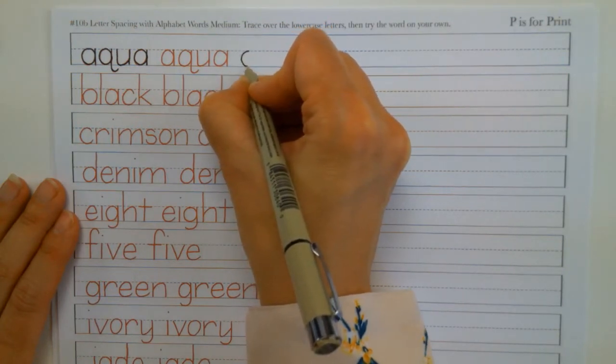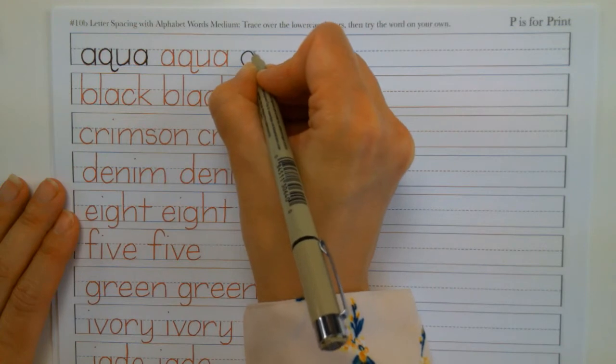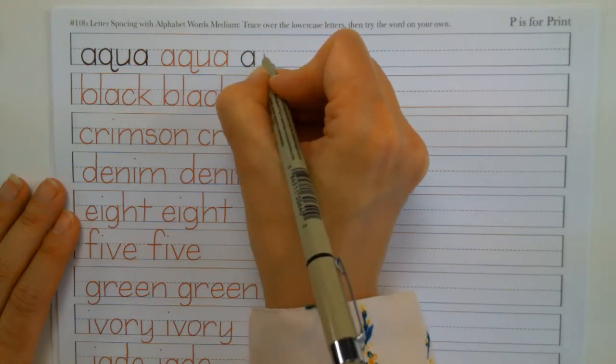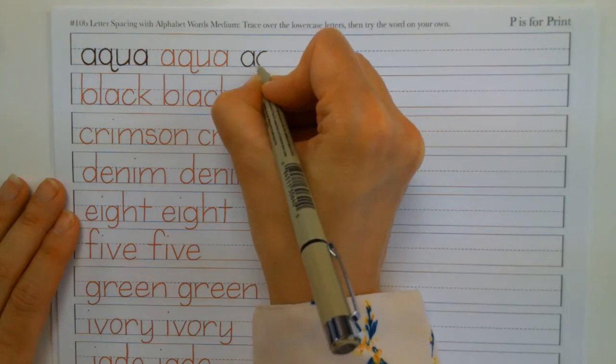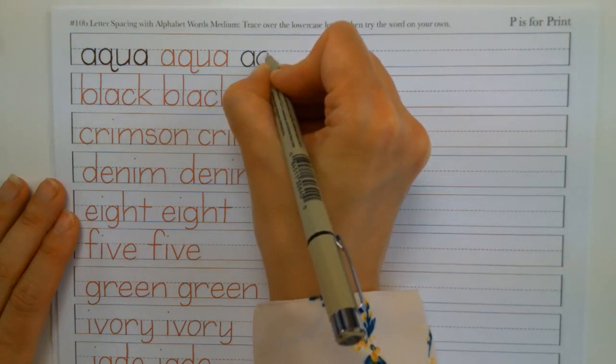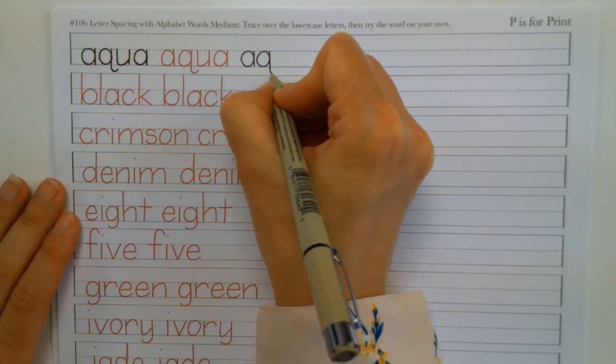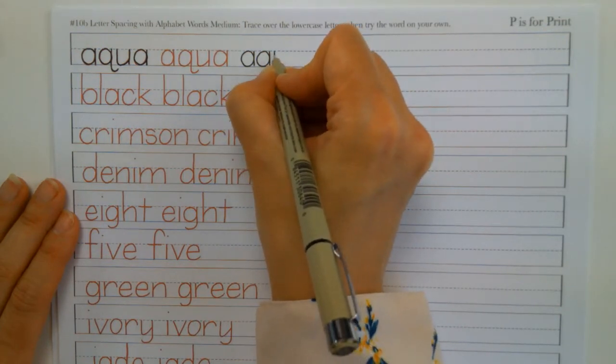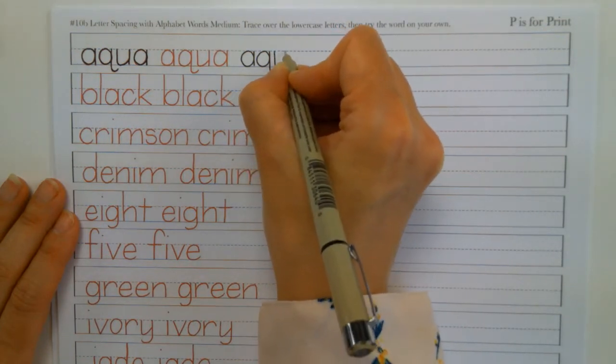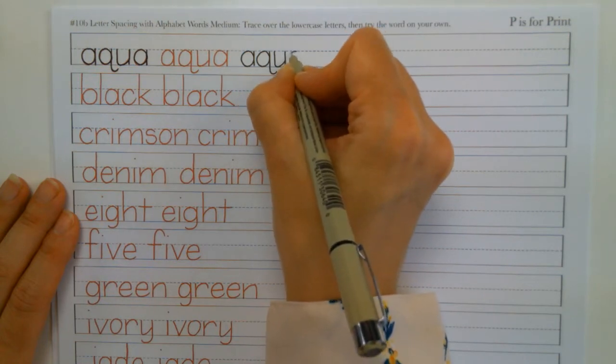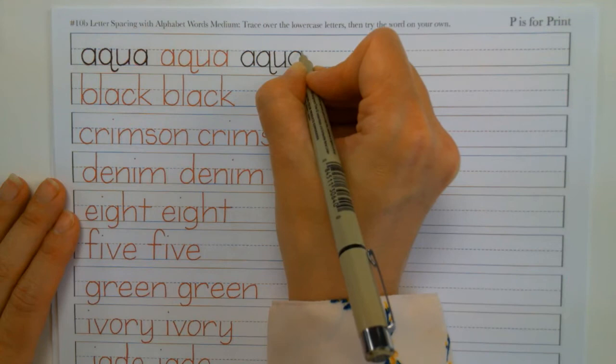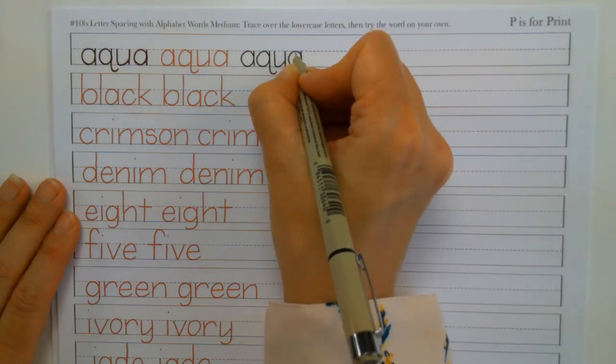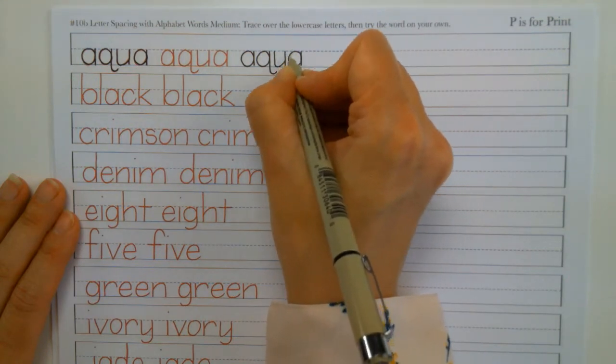So start with your A, and then we have our Q. So we want a nice space in between. You're getting used to seeing that space. It's okay if it's a little bigger, a little smaller. That's why we're practicing. U and A.